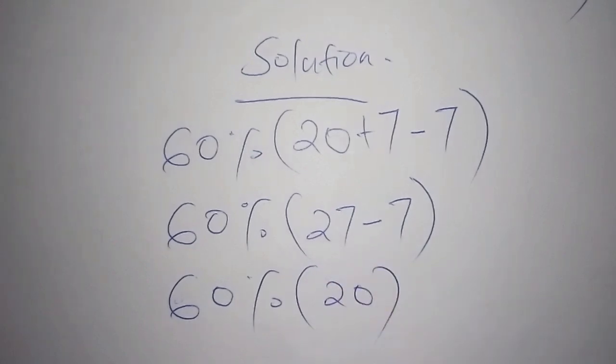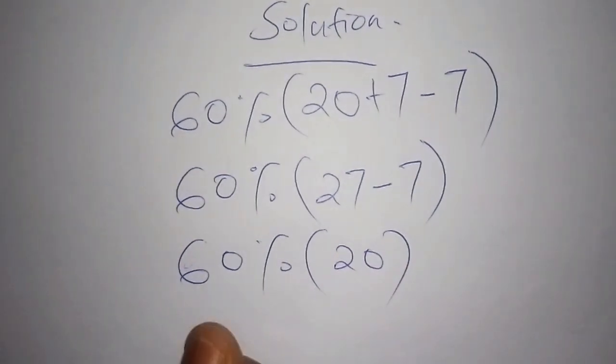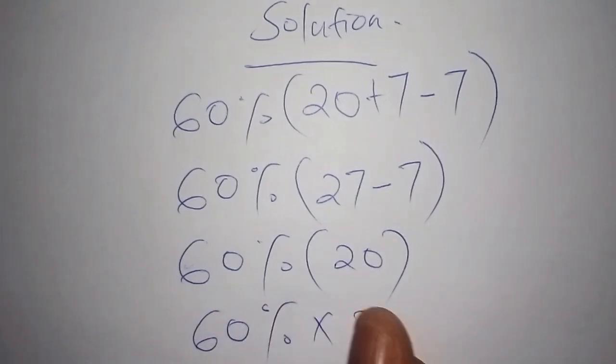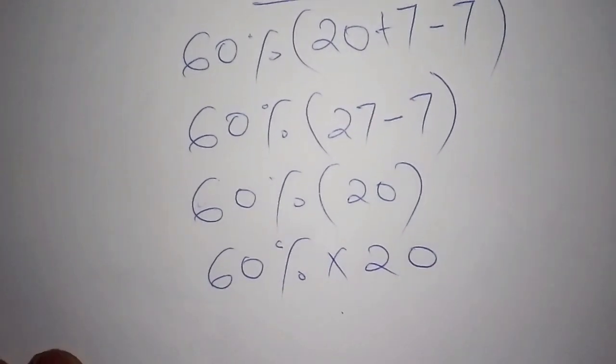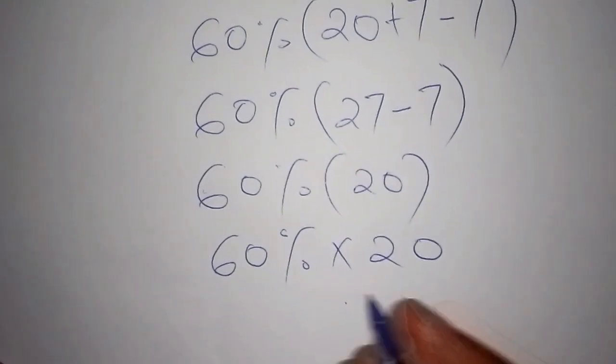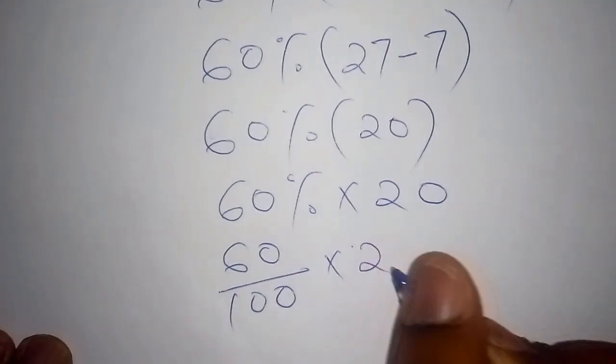So in short now we are having 60 percent. Let's open the bracket, 60 times 20. What is 60 times 20? We can also write it as 60 over 100 multiply by 20, because 60 percent can also be written as 60 over 100.